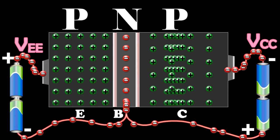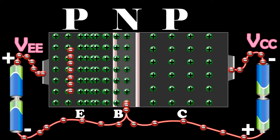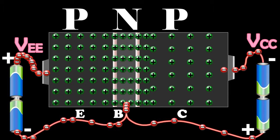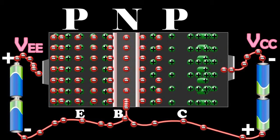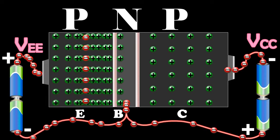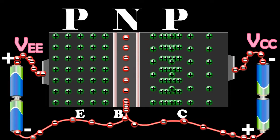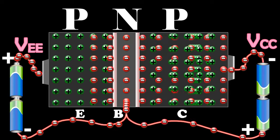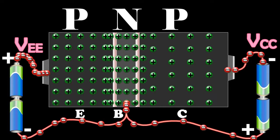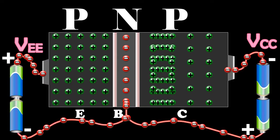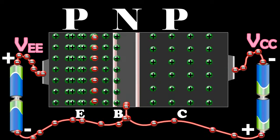The holes diffuse through the base. These holes take a very small time to flow through this region before they reach the depletion region. During this time, a very small number of holes recombine with an equal number of electrons in the base, because the base is lightly doped and very thin. This number is very small. The loss of total number of electrons per second is made up by the flow of an equal number of electrons from the negative terminal of VEE into the base. The flow of these electrons contributes to the base current IB.